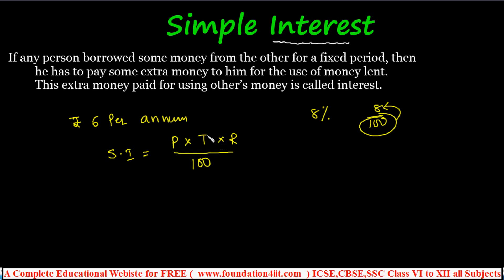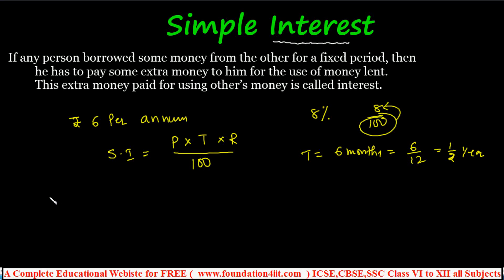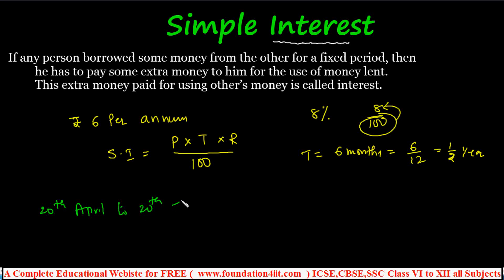If rate is 8%, it means eight out of hundred — for every hundred rupees, eight rupees extra must be paid. So SI = PTR/100. If time is six years, T = 6; for three years, T = 3. If time is in months and years combined, convert to years only. Six months converts to 6/12 = 1/2 year. Also, for date-based problems: if a person borrows on 20th April and returns on 20th September, the date of borrowing (20th April) is not counted.